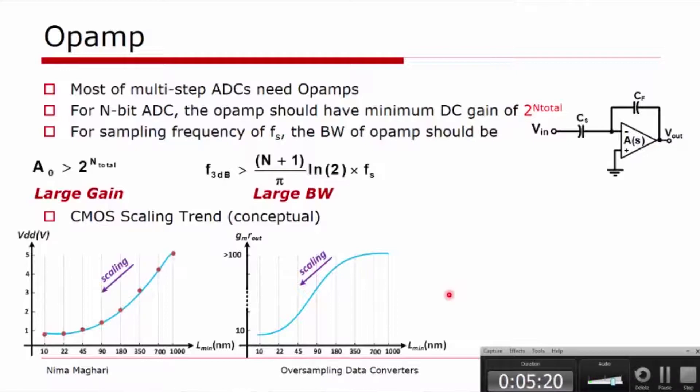On the other end, if you look at the CMOS scaling trend, you can see that the supply has dropped substantially, so we lose a lot of signal power. And the gmro out of the transistor, especially the ro out of the transistor, has substantially reduced as we go to the advanced nodes. Therefore it would be very difficult to design an op-amp with very large gain and very large bandwidth at the same time and make it extremely power efficient.